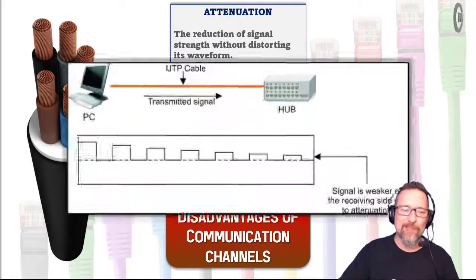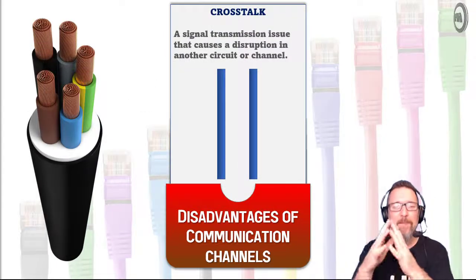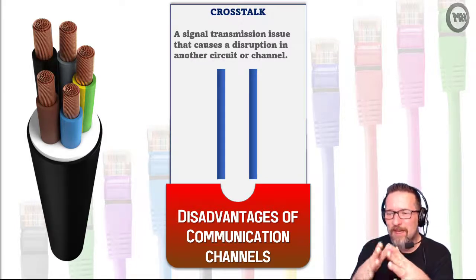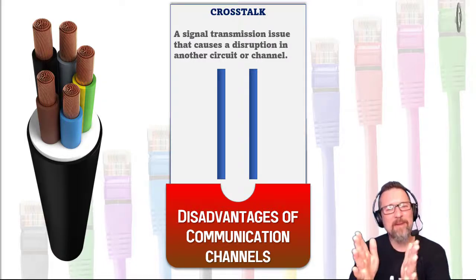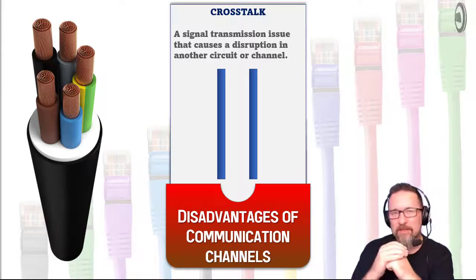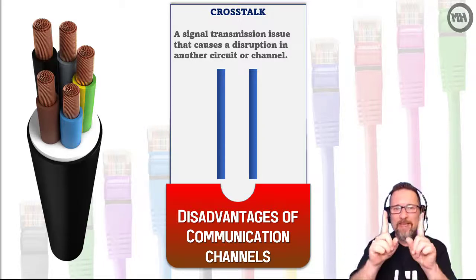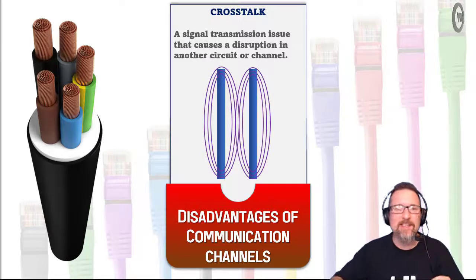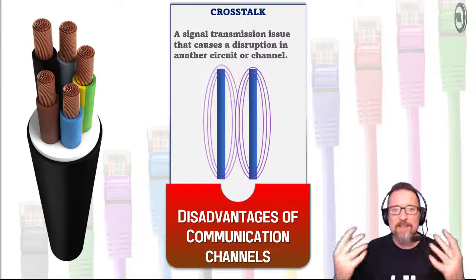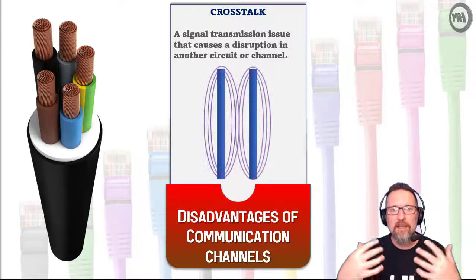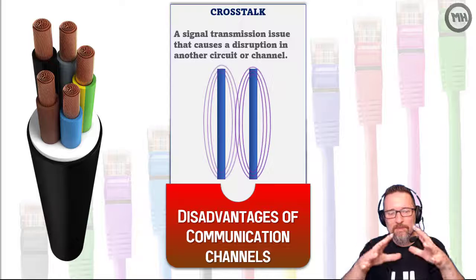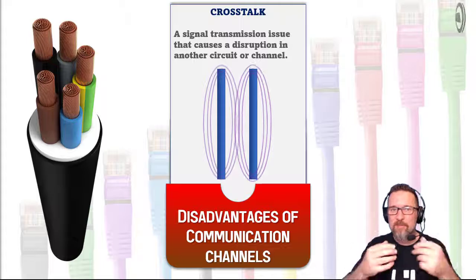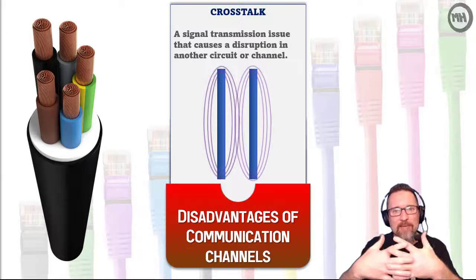The last term is crosstalk. Crosstalk is when a signal transmission causes a disruption in another circuit or channel. Looking at those two blue lines — imagine those are two different cables. As data travels up and down these cables, electromagnetic fields are generated around them.